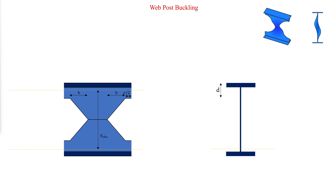Web post buckling is caused by the horizontal shear force passing through the web post. The ultimate strength of the web post is governed by one of two modes: either flexural failure caused by the development of a plastic hinge in the web post, or buckling failure of the web post. The mode of failure is dependent on the geometry and thickness of the web post.